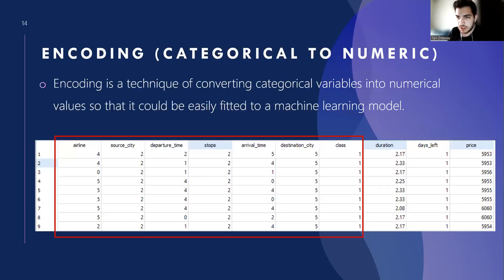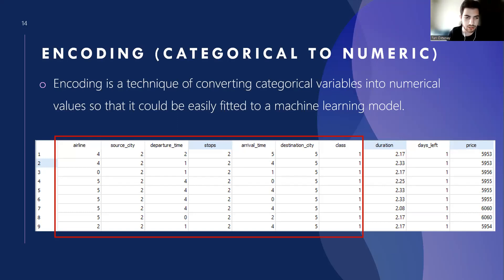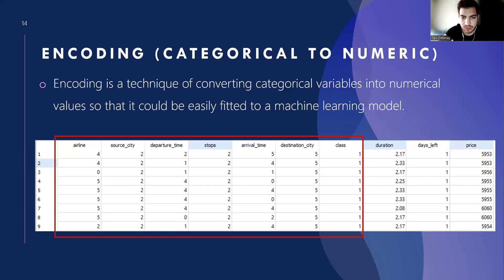We encoded the categorical features and converted them into numerical values. Encoding is a technique of converting categorical variables into numerical values so that they could be easily fitted to a machine learning model. You can see the final version of our data at the bottom of the screen.